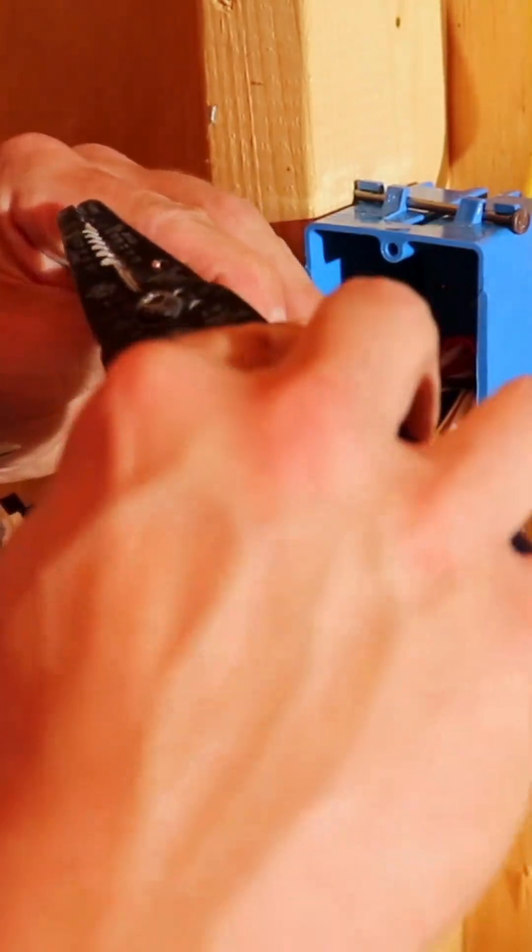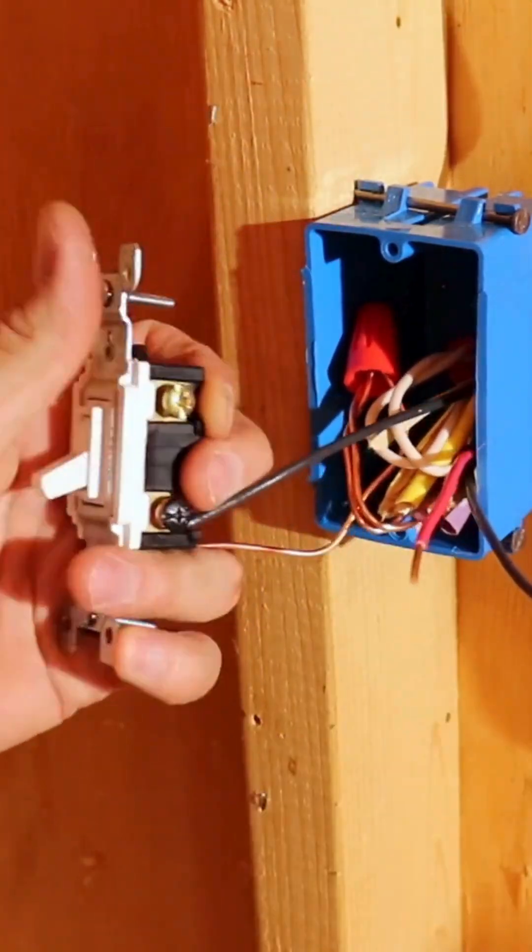And lastly, we connect the black wire in our 12-2 that runs up to the light fixture to the black common terminal.